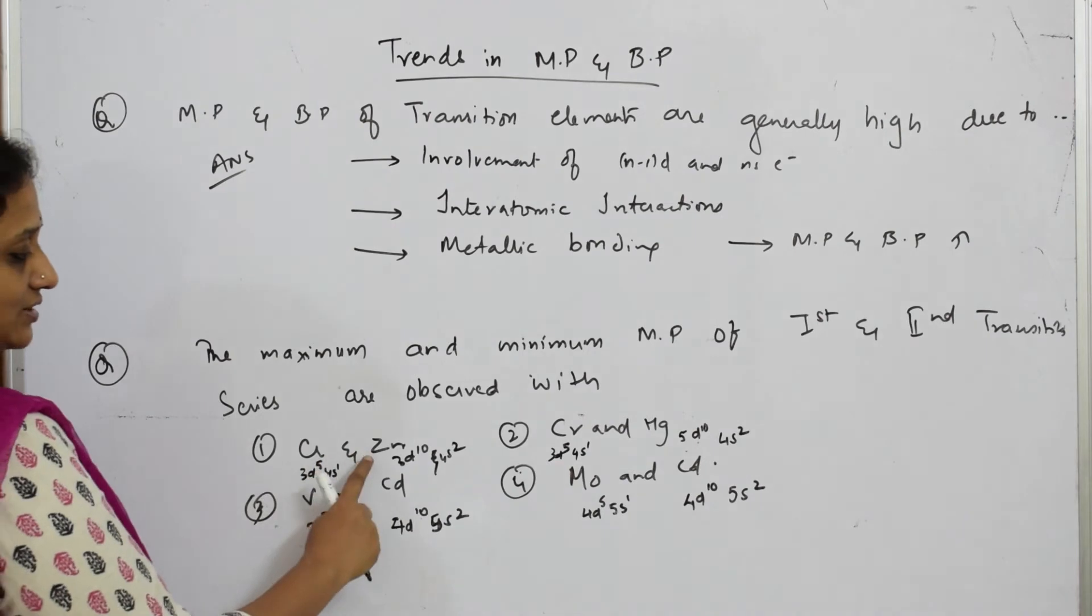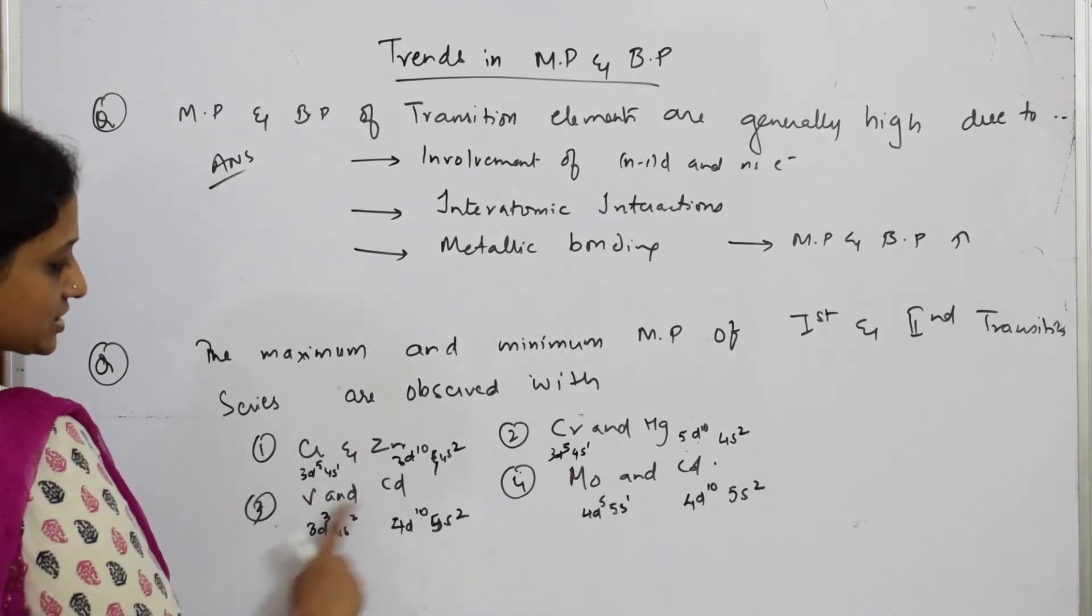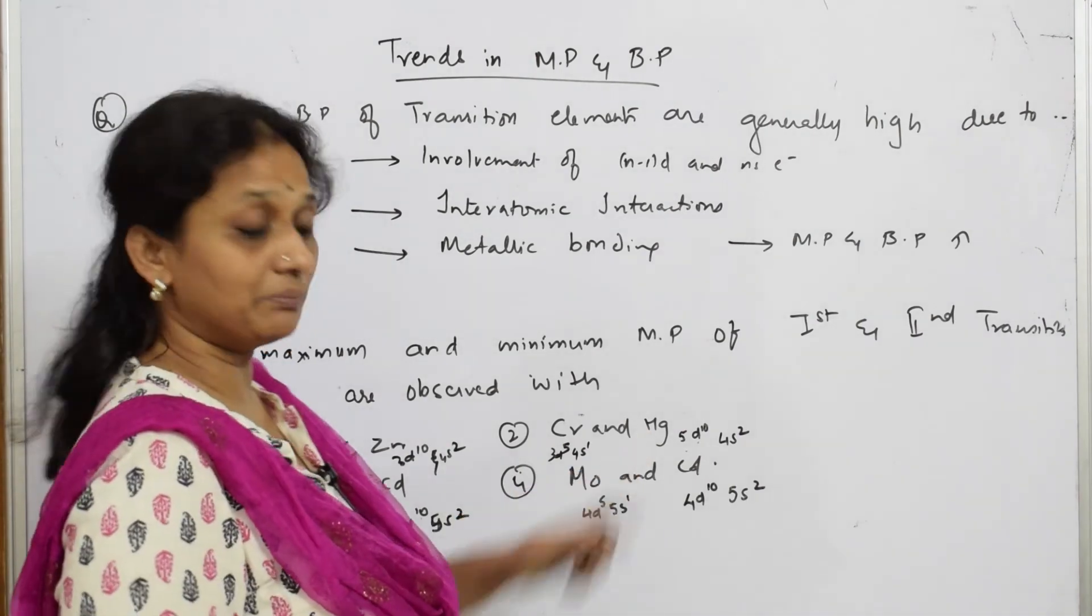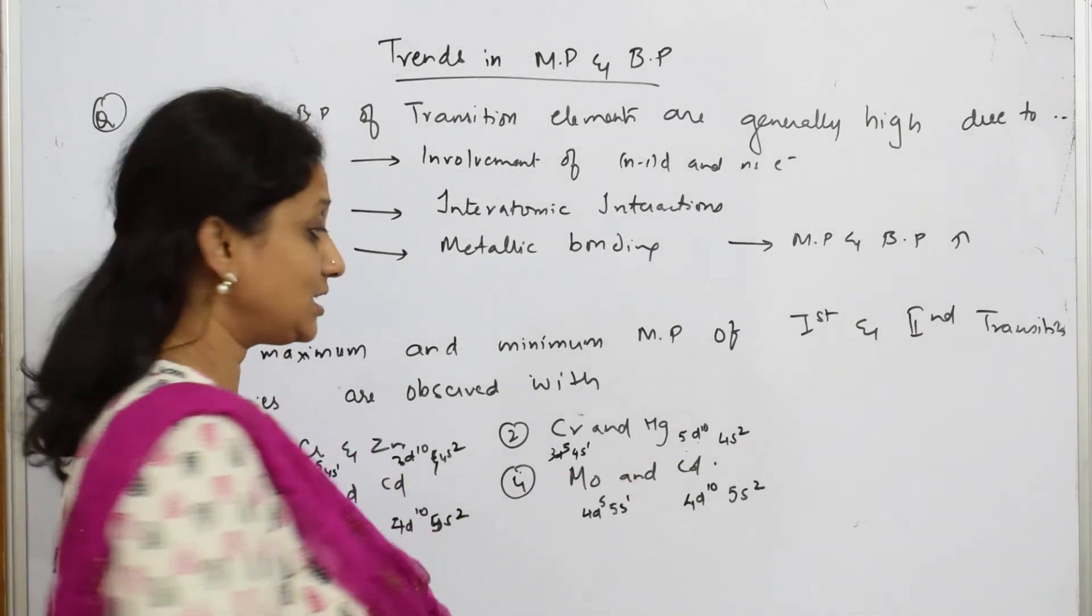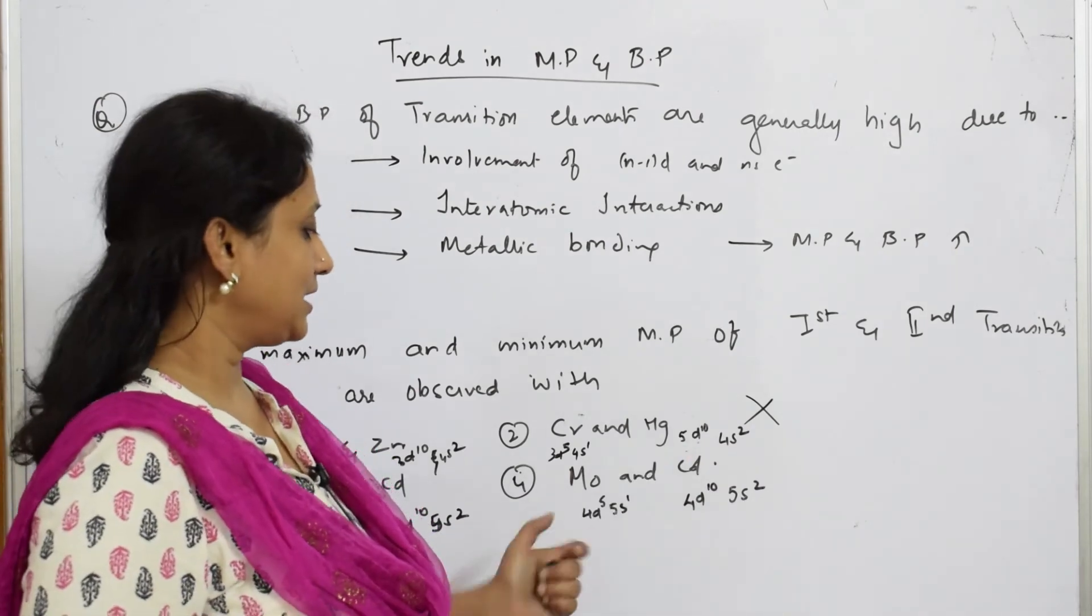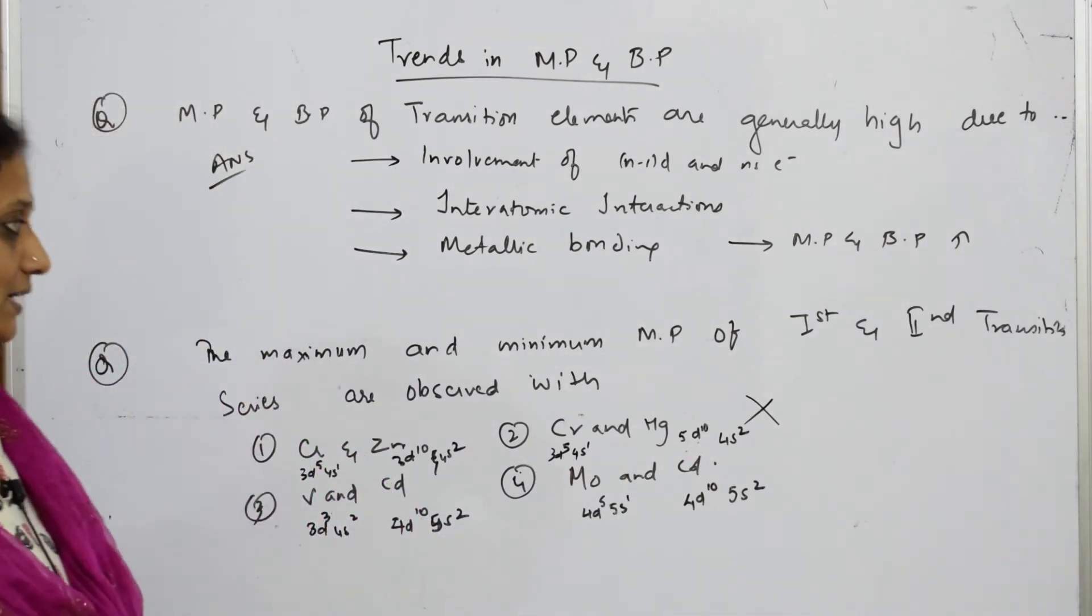Now, are these two first and second transition series? Yes. These two? Yes. This one? No. Mercury comes in the third series, isn't it? So I should not consider this - irrelevant. Next, Mo and Cd. Now, my answer is not that.